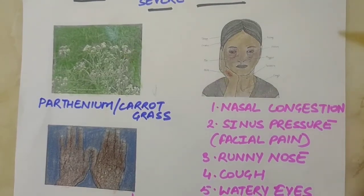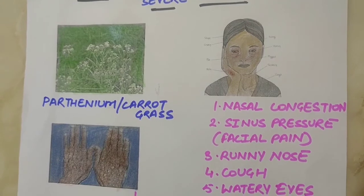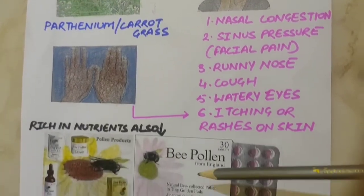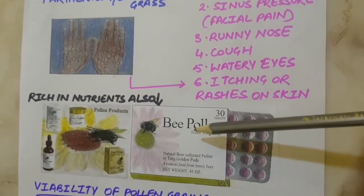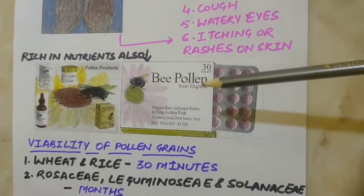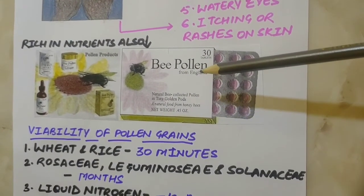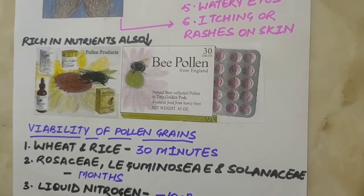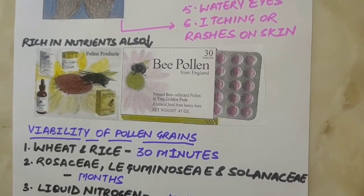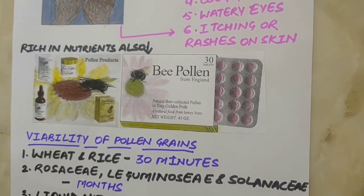But in spite of causing pollen allergy, pollen grains are rich in nutrients. They are used as pollen tablets, syrups or food supplements. It has been claimed that they can increase the performance of athletes and race horses.